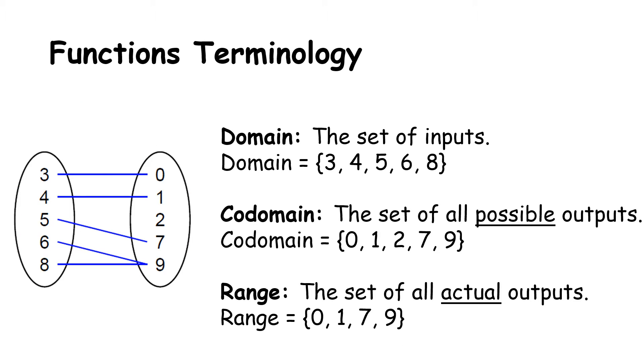Let's look at the terminology in more detail. The domain means the set of inputs. So the domain in this example here to the left is 3, 4, 5, 6, and 8. They're all the inputs, or what we see in the first set in our mapping diagram. The co-domain then is the set of all possible outputs. So that's everything we see in the second set of our mapping diagram. That is 0, 1, 2, 7, and 9.